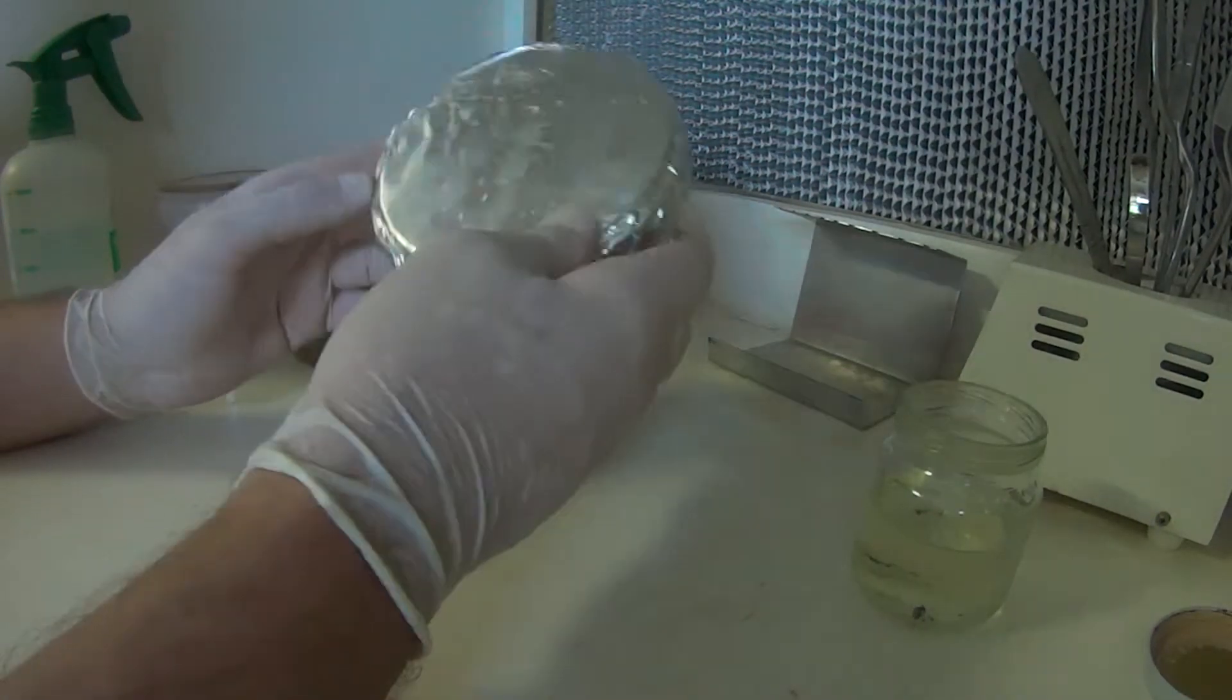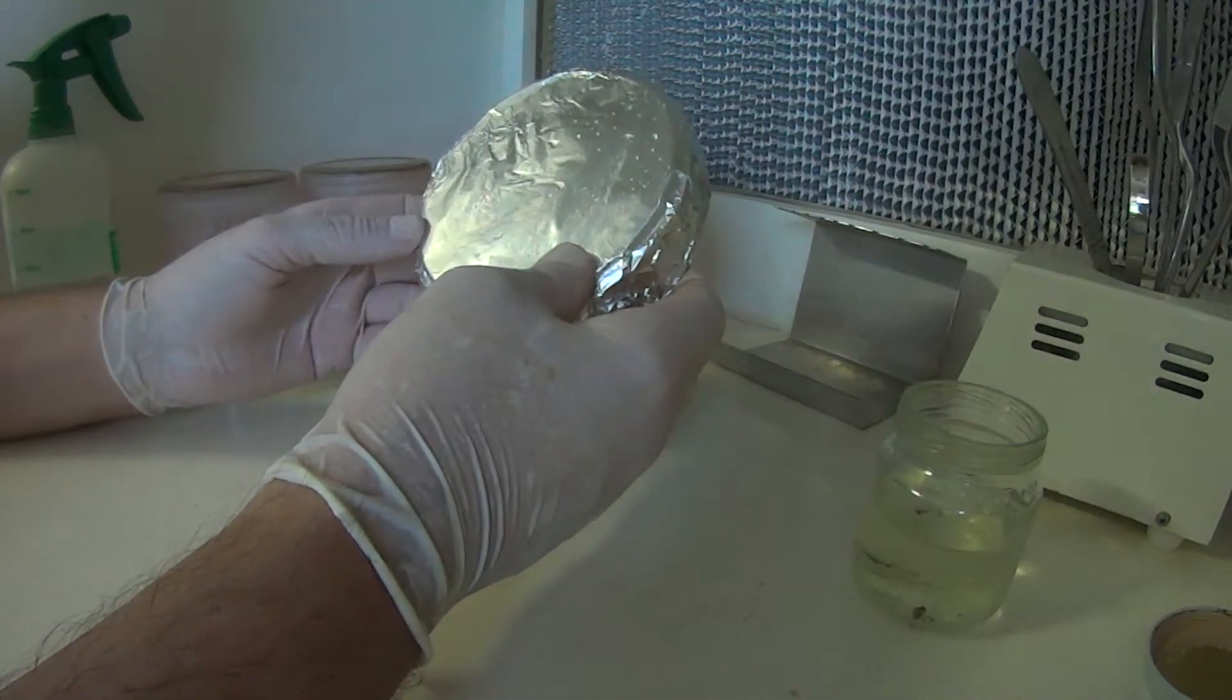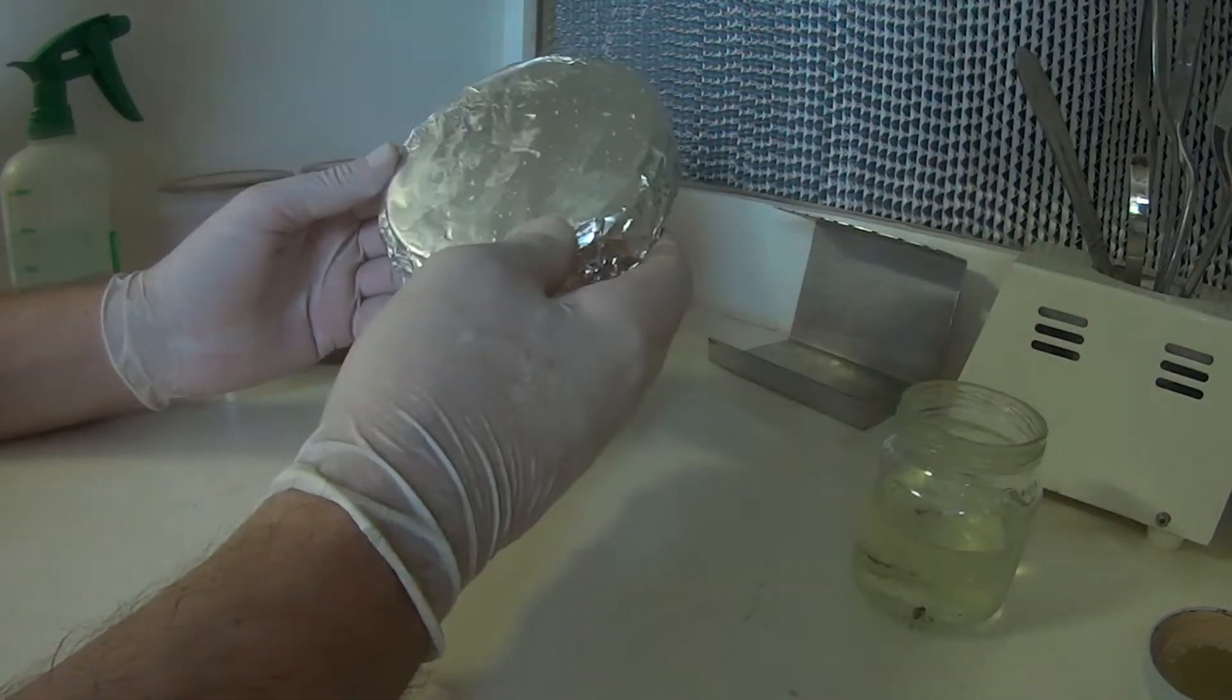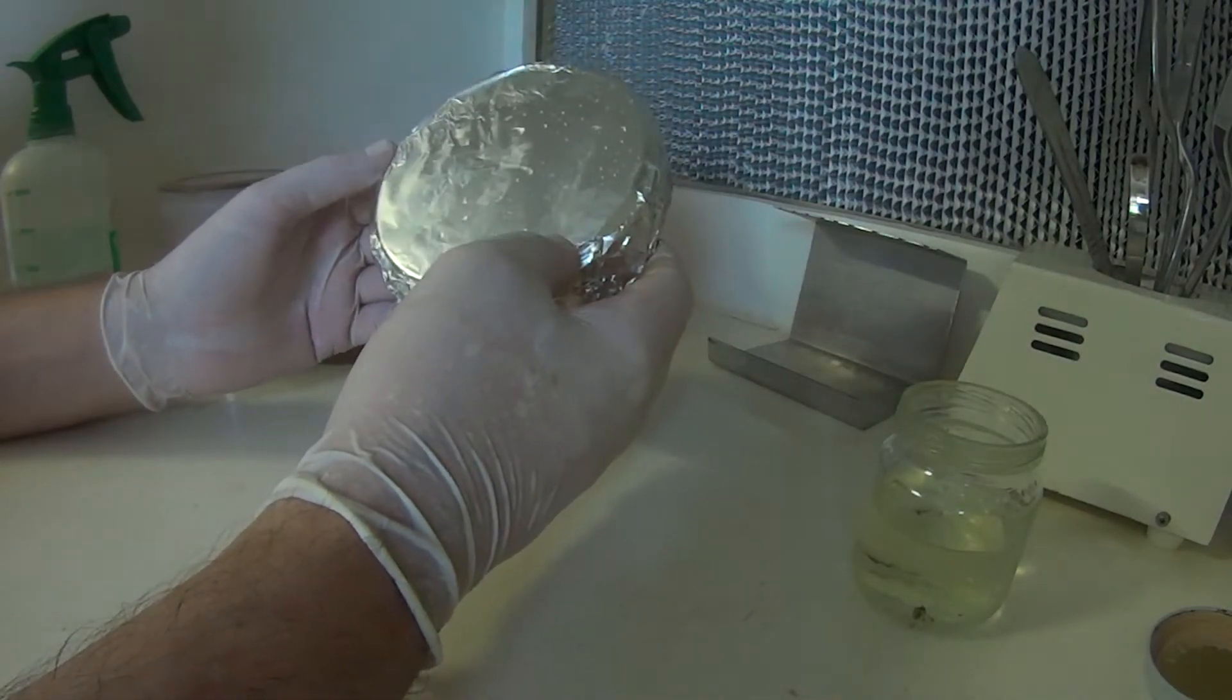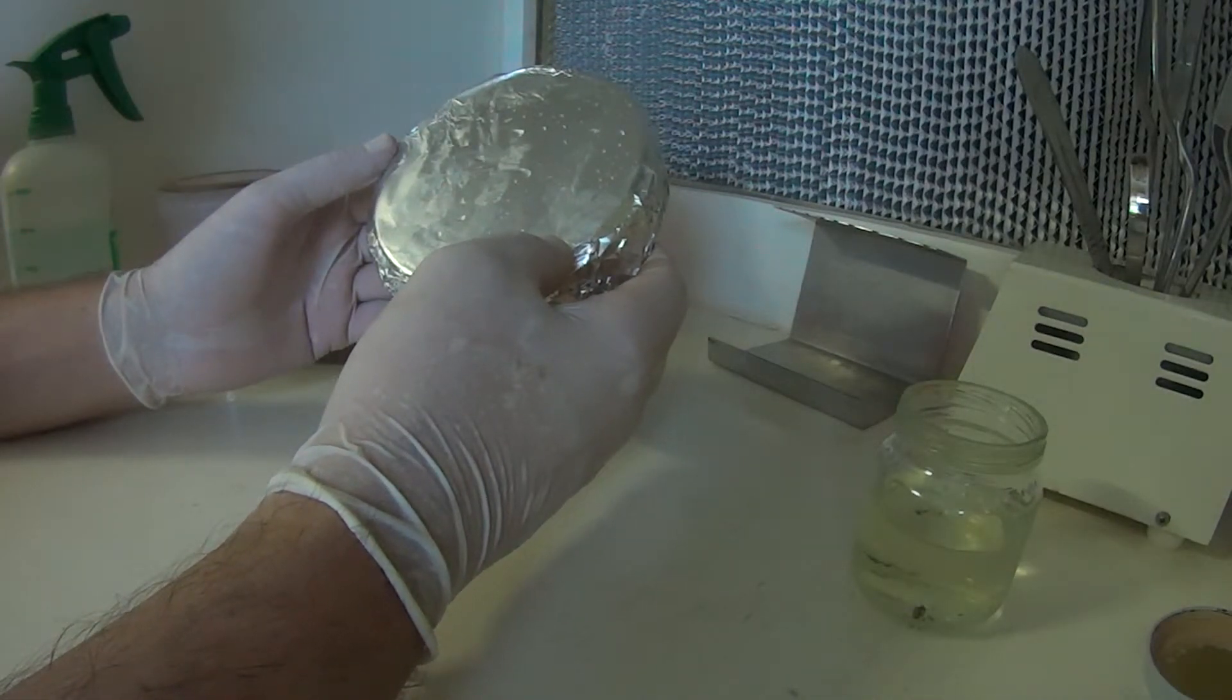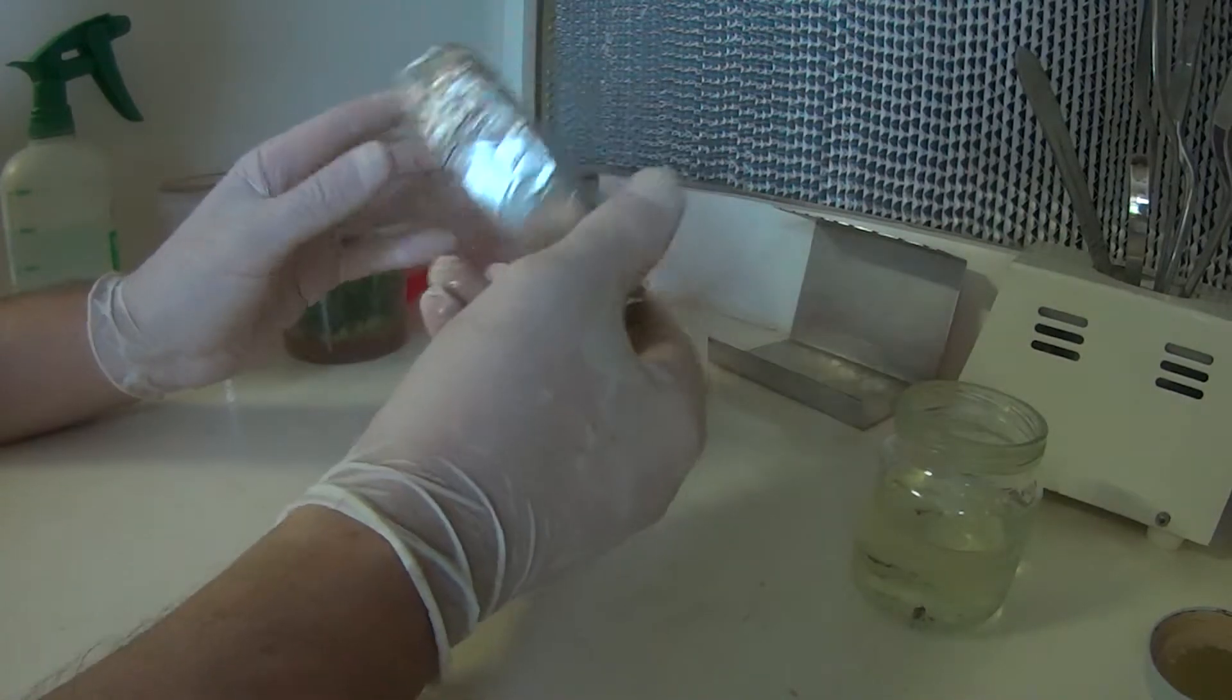This is just a petri dish wrapped up in aluminum foil. Clean the dish, wrap it up in foil and then stick it in the oven and cook it at around about 200 degrees Celsius for half an hour. Let it cool down and it's all wrapped up, so the dish is sterilized inside.